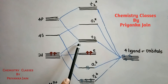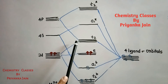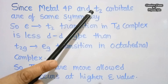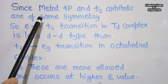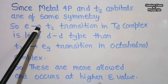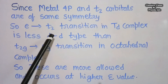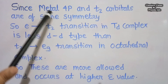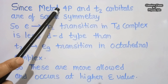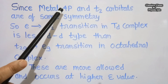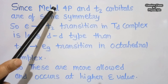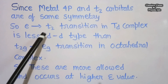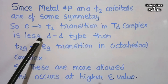In tetrahedral complexes, the 4p t2 orbital and the 3d t2 orbital have almost the same symmetry, since gerade and ungerade subscripts are not used. Therefore, these orbitals can mix — orbital mixing occurs — and the t2 orbital belongs to both the p and the 3d orbital. Because of this mixing, the e to t2 transition in tetrahedral complexes is less purely d-d in character than the t2g to eg transition in octahedral complexes.